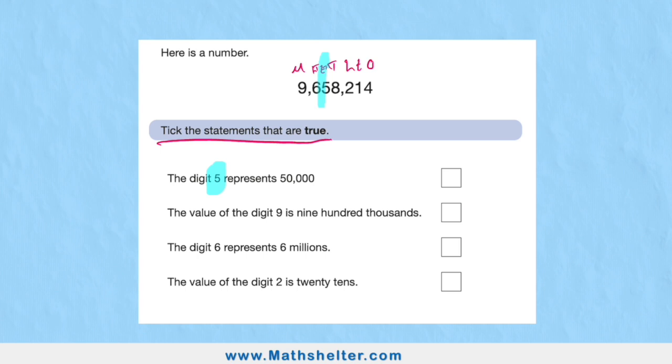The number five is in the ten thousands, so it's actually not a five—it's fifty thousand. So in this case, the five does represent fifty thousand. Give it a tick. The value of the digit nine is nine hundred thousand. Well, we can see that's clearly not true because the nine is in the millions, so I'm not going to tick this box.